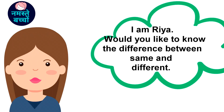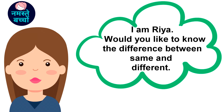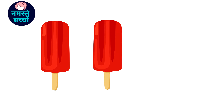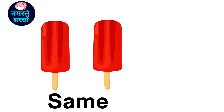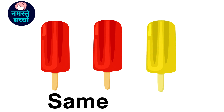Hi friends, I am Rhea. Would you like to know the difference between same and different? Look, there are two ice creams — they are both red in color and their size is also the same, so we can say they are the same objects. Now look at another ice cream which is the same in size but different in color.